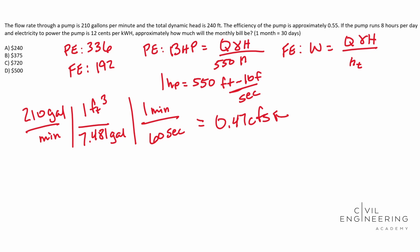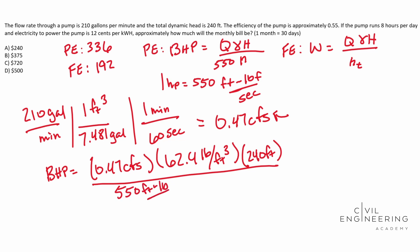So let's plug all that into our BHP formula here. So BHP is equal to our flow rate 0.47 cubic feet per second times our gamma. Let's assume water, it doesn't specify, 62.4 pounds per cubic foot. And then we need to multiply that by our head. Our head is given in the problem as 240 feet. And we're going to put all that over 550 foot pounds per second. And then we need to multiply that by, always remember to write out your units so that way you can make sure they work out.